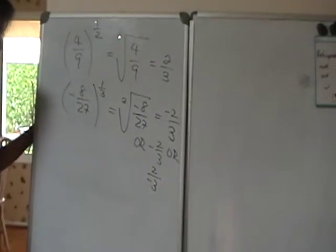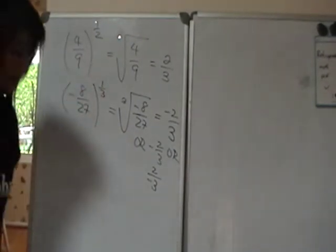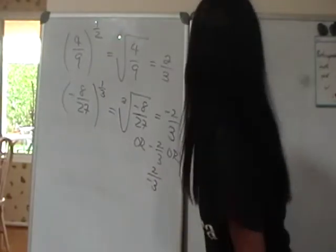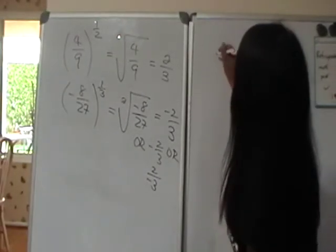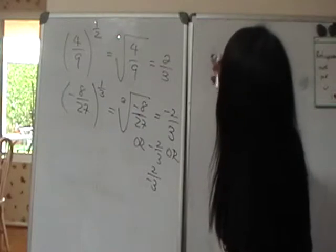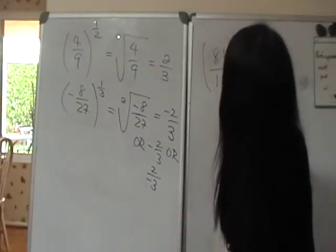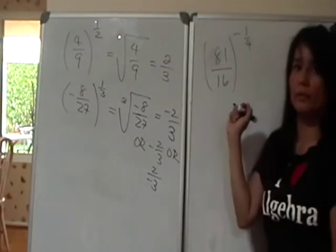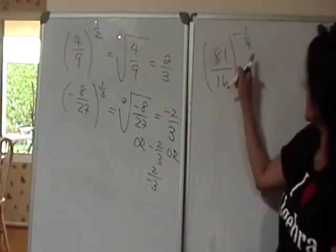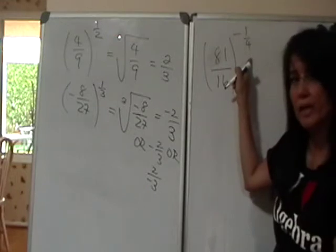I guess maybe you want me to explain what about if I have a negative exponent. So if I have, let's say, 81 over 16, and I have this raised to the negative 1/4.